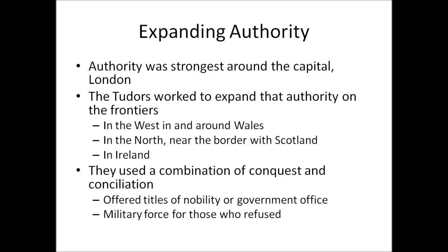The way that they're going to do this is that the English crown is going to go after not just those English noblemen on the frontiers, but the Welsh, the northerners, and the Irish, and bring them in through a combination of ways. First, they're going to offer them titles of nobility or government office — essentially saying, look, you're used to doing things your way, but how about we give you a title, money, and land, and you do things our way. For people who refused to take up that offer, they would simply send the army in.